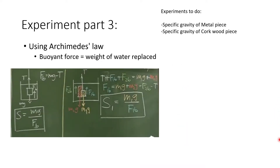Part 3: you're going to be using Archimedes' law. Archimedes' law states that the buoyant force equals the weight of the water being displaced. When you submerge a material in water and hang a string on top of it, you'll feel that the mass is slightly lighter — this is from the buoyant force. Since the buoyant force Fb equals mg minus T, you can actually calculate the specific gravity S by finding the ratio of the weight of the mass in air divided by the buoyant force.